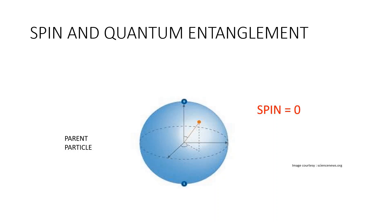Consider a parent particle with zero spin and let it decay into two particles. Spin is a conserved quantity and it can never change. If the parent particle has zero spin, then the two daughter particles must have opposite spin.